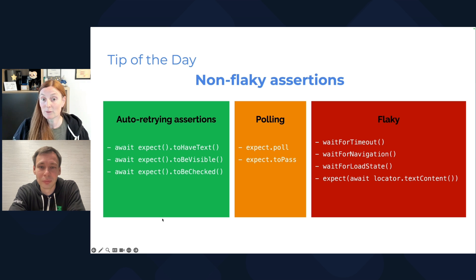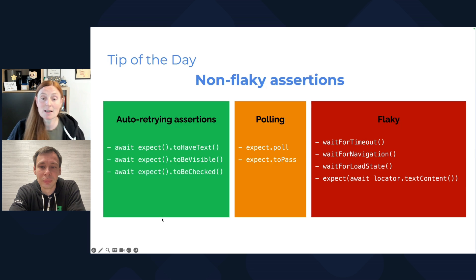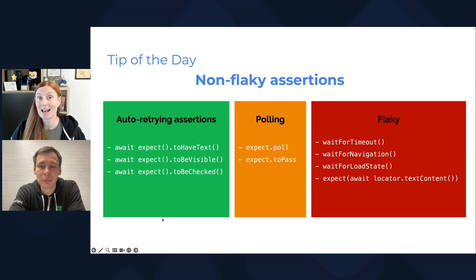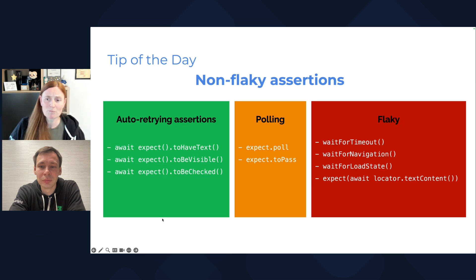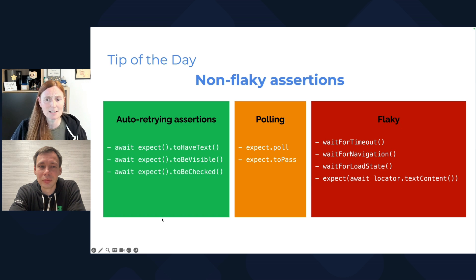Then you have polling, which is sometimes okay — expect poll, expect to pass. And flaky ones: don't use them unless you really have to, but try not to. Wait for timeout, wait for navigation, wait for load state, or anything with an expect before the await — because they're flaky.